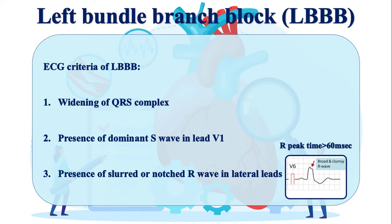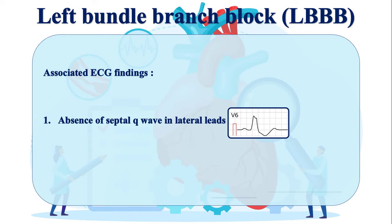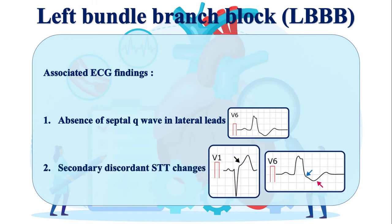In addition to the diagnostic triad of LBBB, there are a couple of associated findings in left bundle branch block as well. Absence of septal Q-wave in lateral leads and secondary discordant ST segment and T-wave changes are two very common associated findings in LBBB.